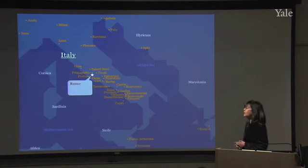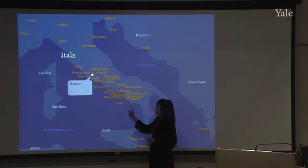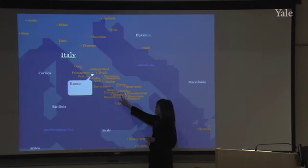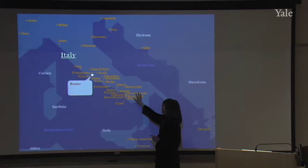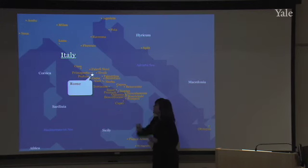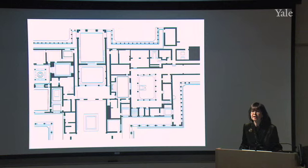In order to explore the third and fourth styles, I need to go to a couple of other cities than the ones we've looked at thus far. I have the map here showing Campania. We are going to be looking at the city and villa in the town of Oplontis, which you see here. We'll also be looking at an important villa at Boscotrecase. You can see the proximity of those two to Pompeii, Herculaneum, Boscoreale, and also Naples.